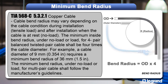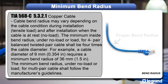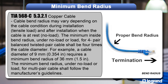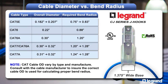It is always the responsibility of the installer to ensure that proper bend radius is maintained during a cable run and at termination. In general, as cable has gone from Category 5 to 7 to accommodate higher speed data transmission, the minimum bend radius required to maintain cable geometry has increased.